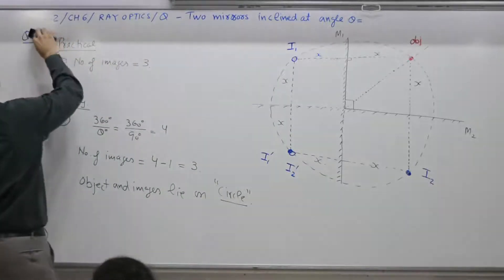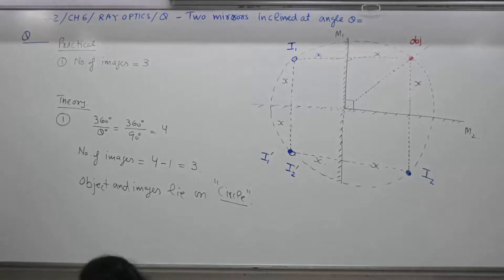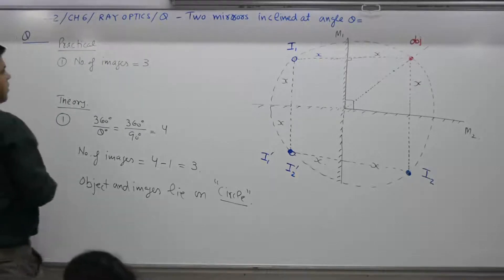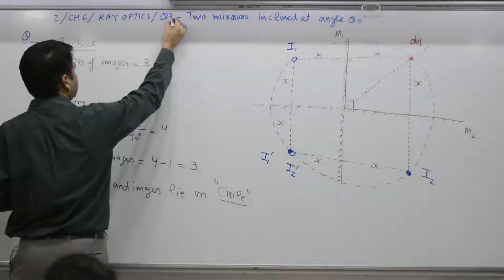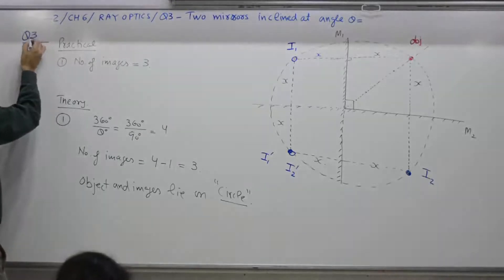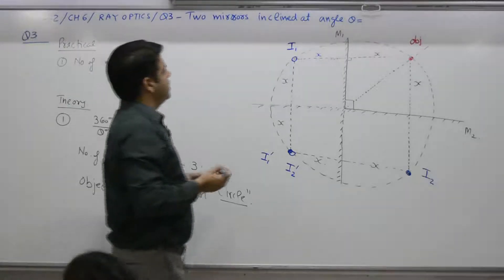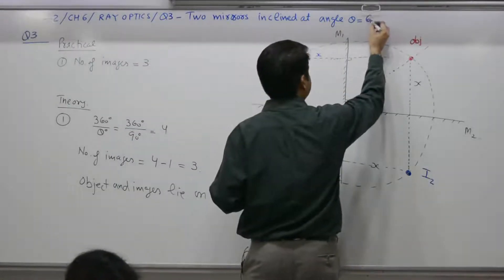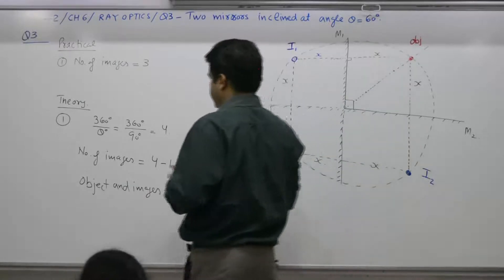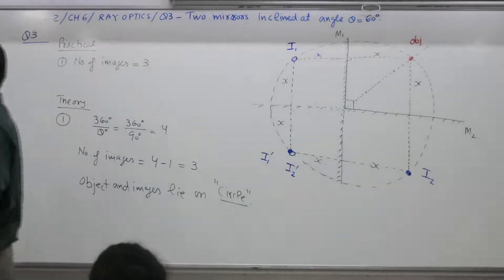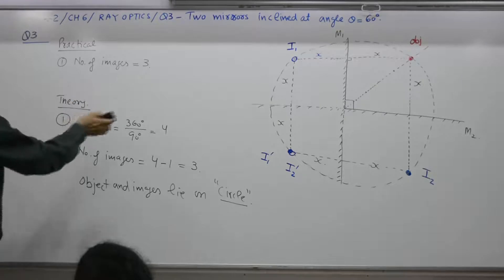Question number three: two mirrors inclined at angle theta equal to 60 degrees. We will perform this practical, then we will have a theory answer also.